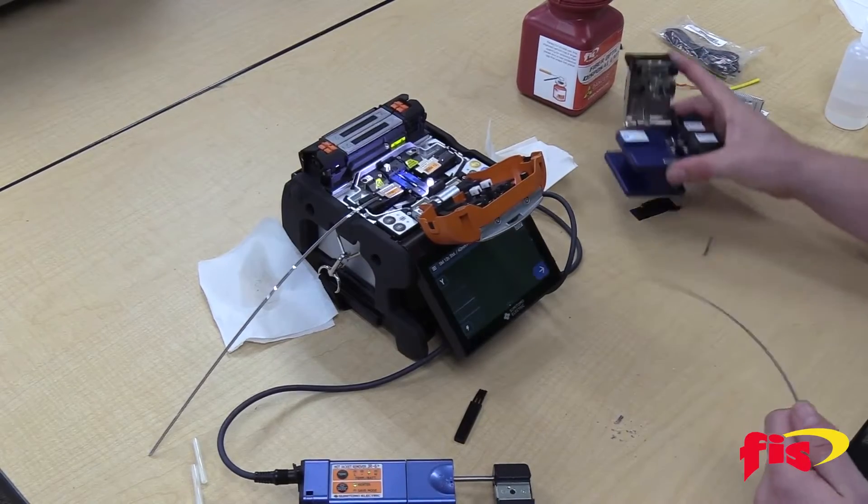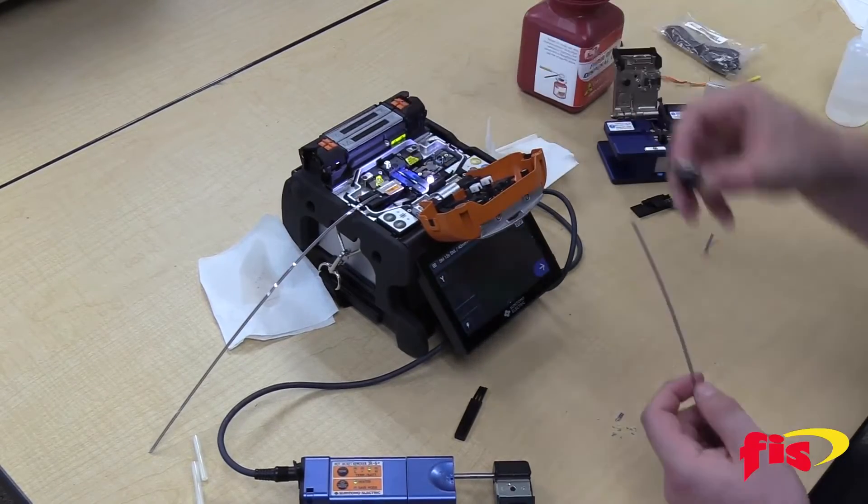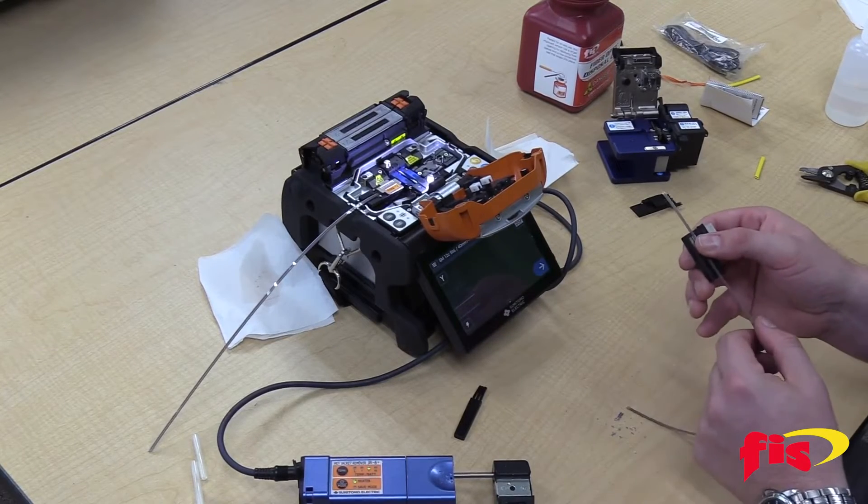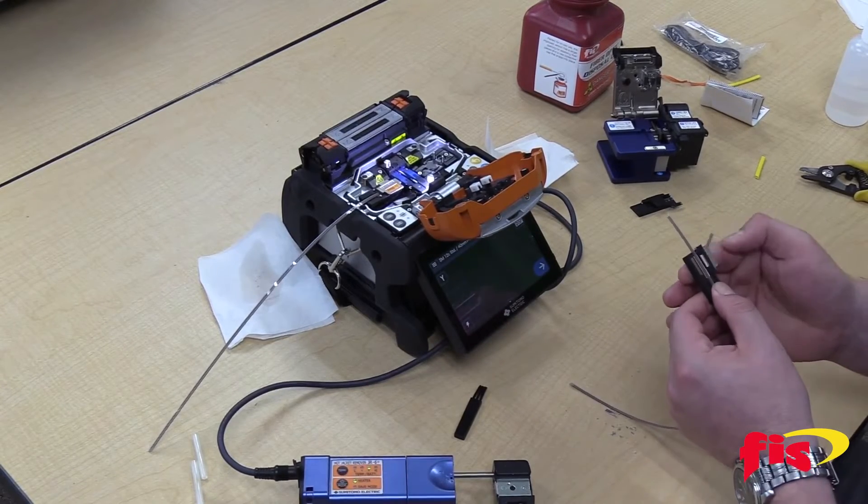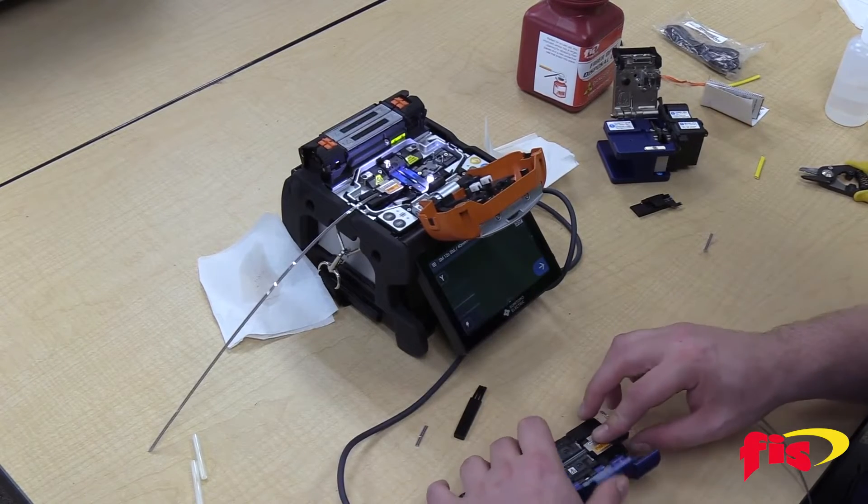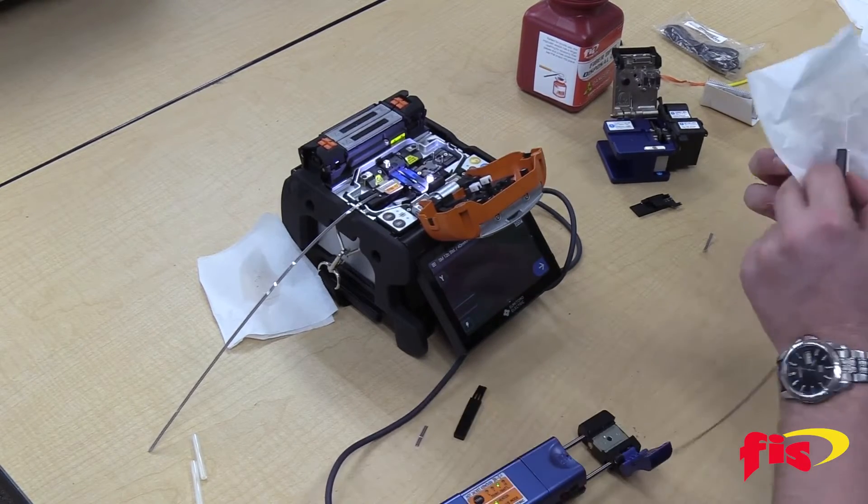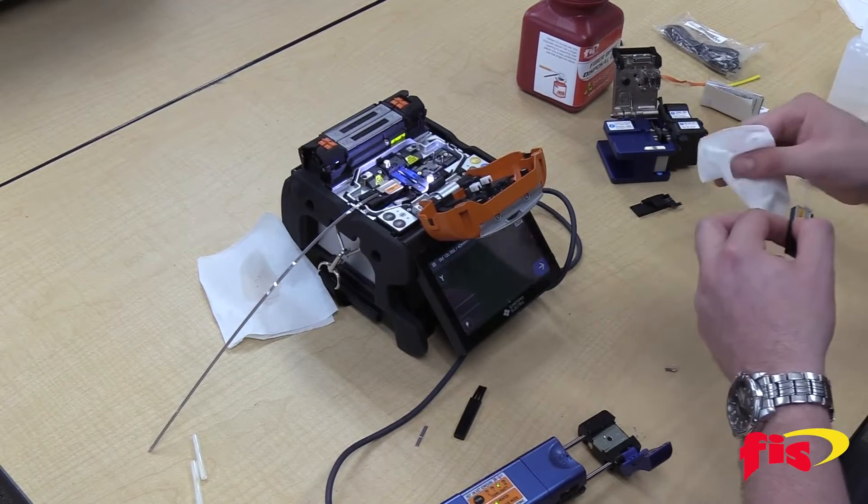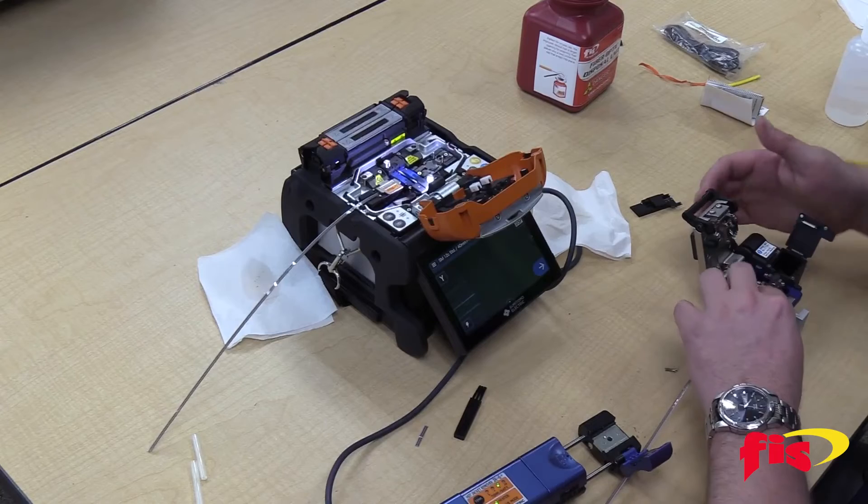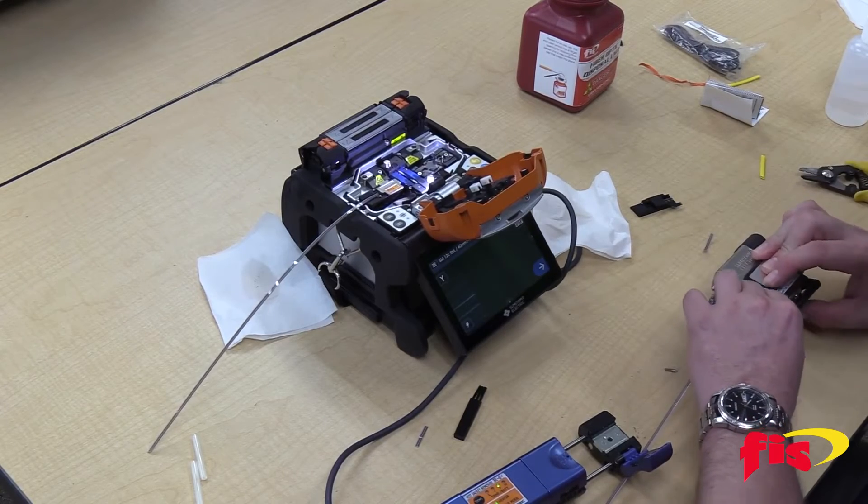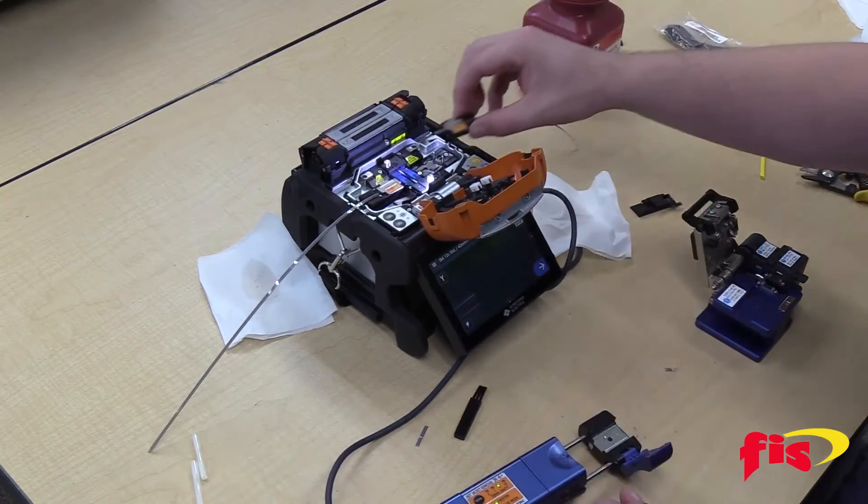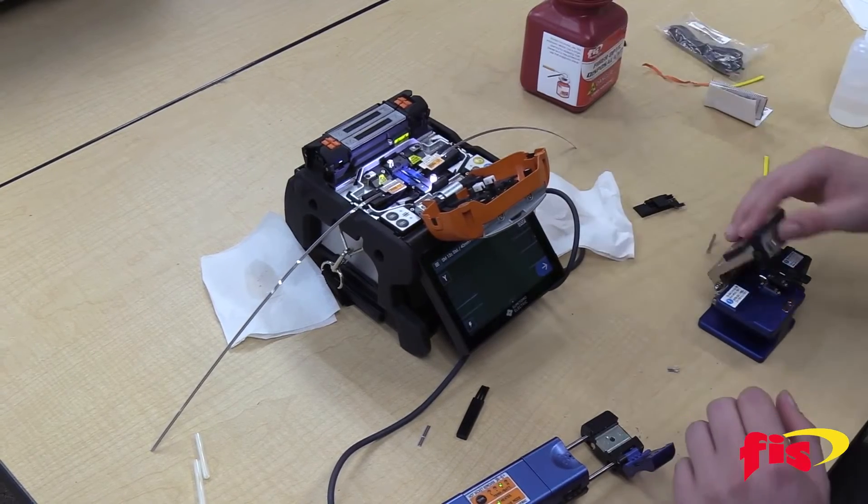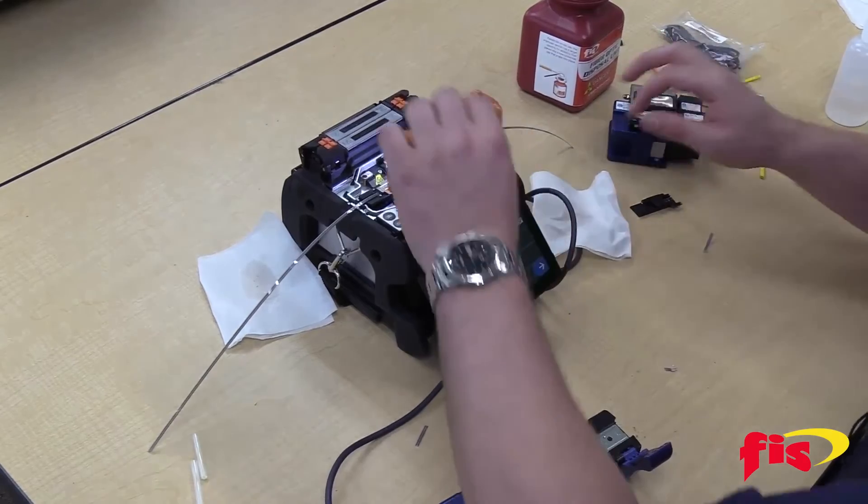Now I do the next side. Then I place the second fiber, like so. Close the hood.